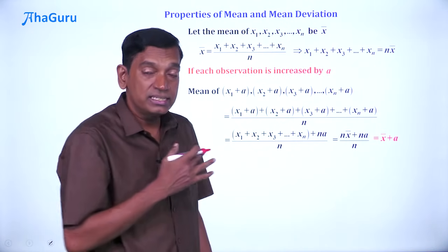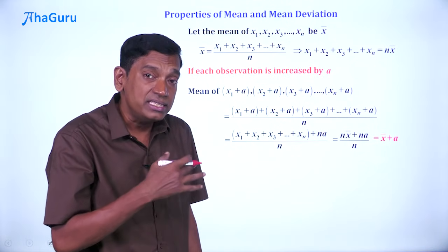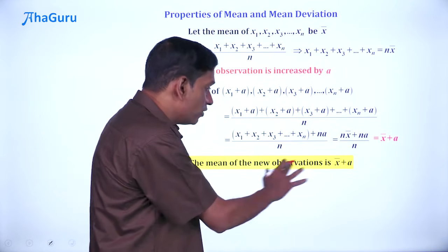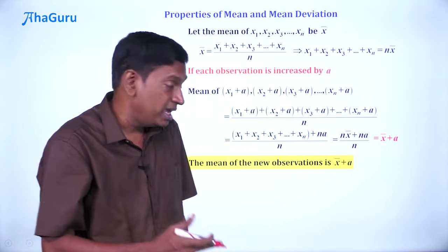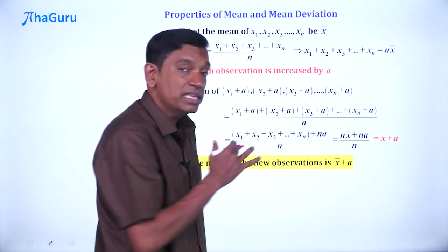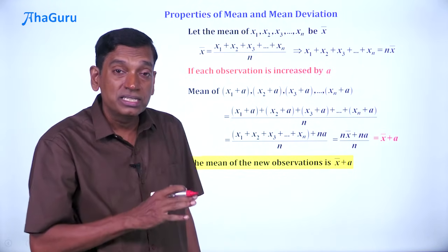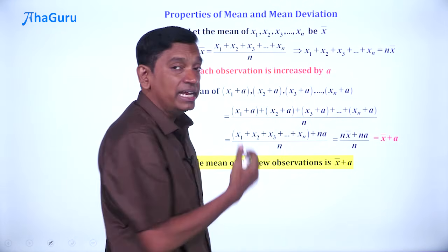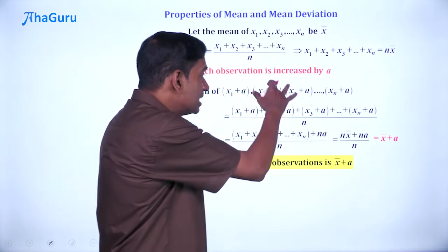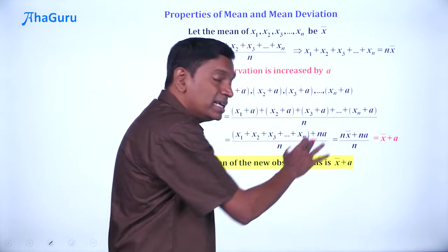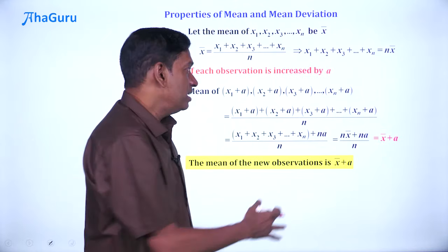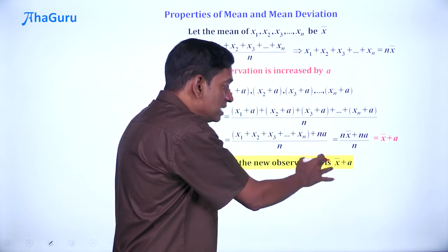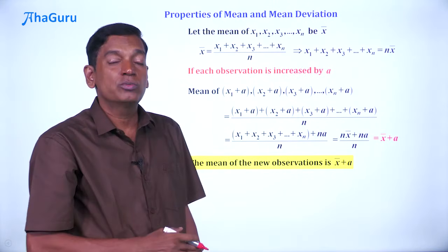The big idea is that if you increase each observation by a, then the mean of the new observations is also increased by a—it is x̄ + a. When we say increase, a can be positive or negative. That means if decreased by a, the mean will be decreased by the same quantity. Whether it's plus or minus, the effect on the mean will be the same.